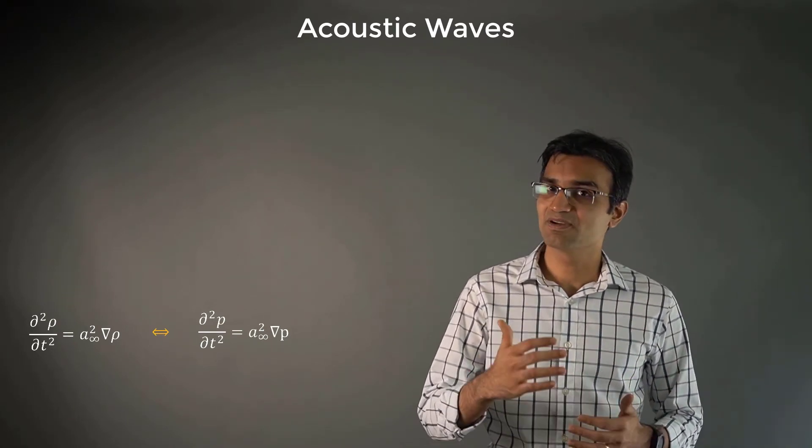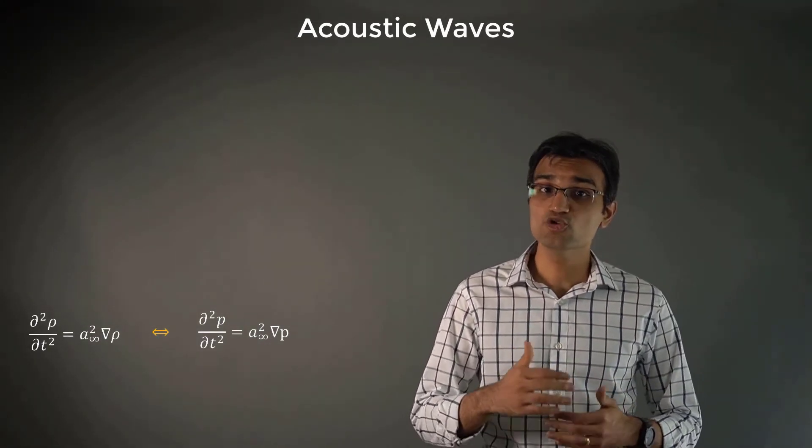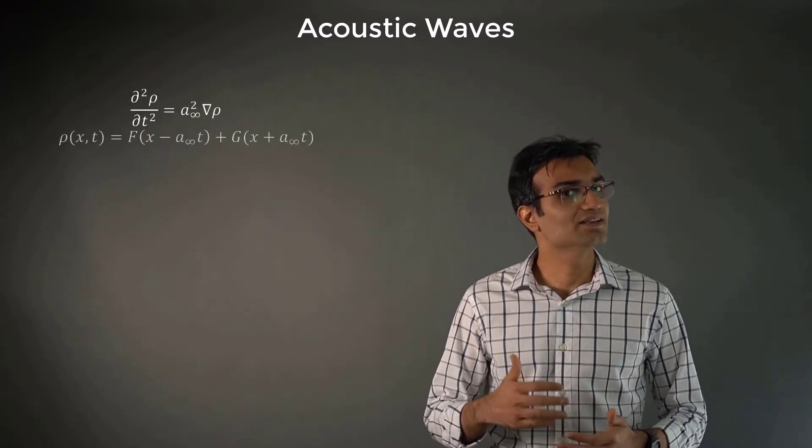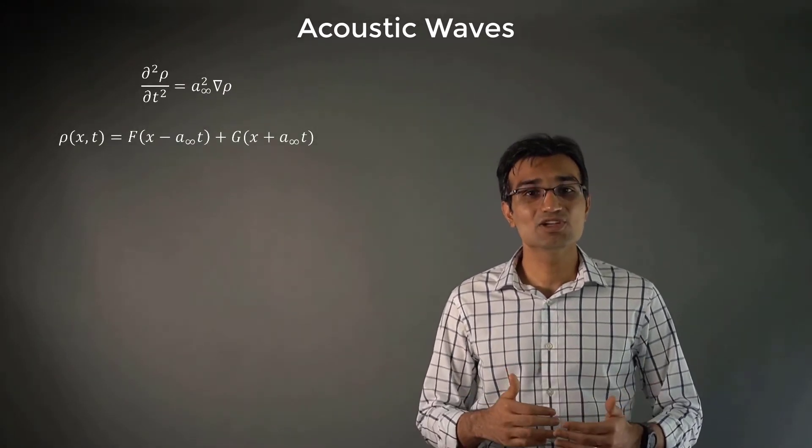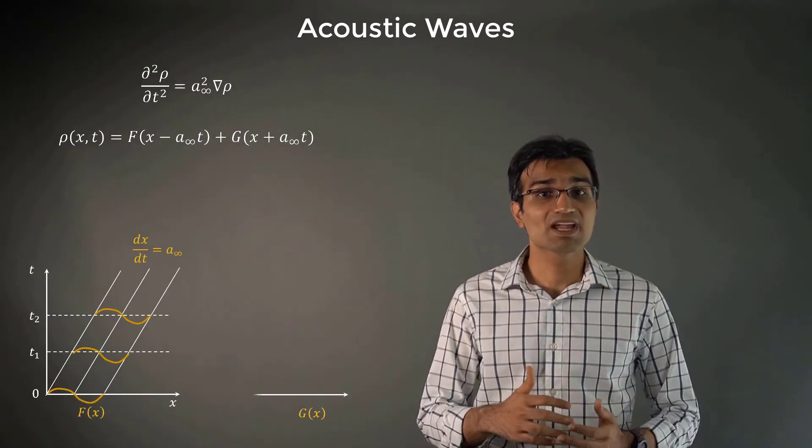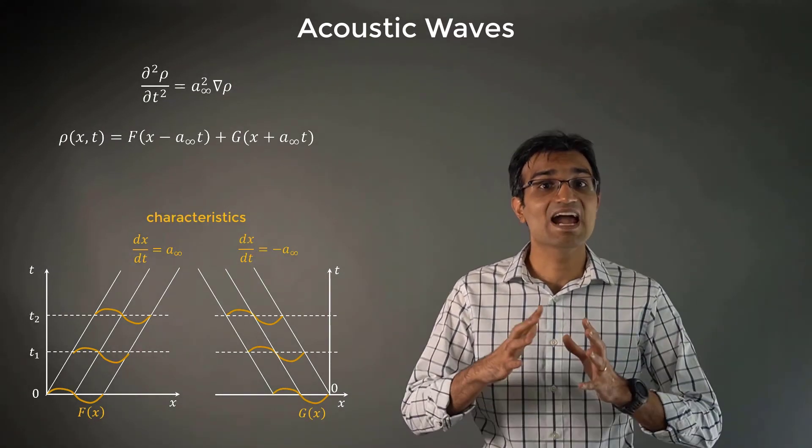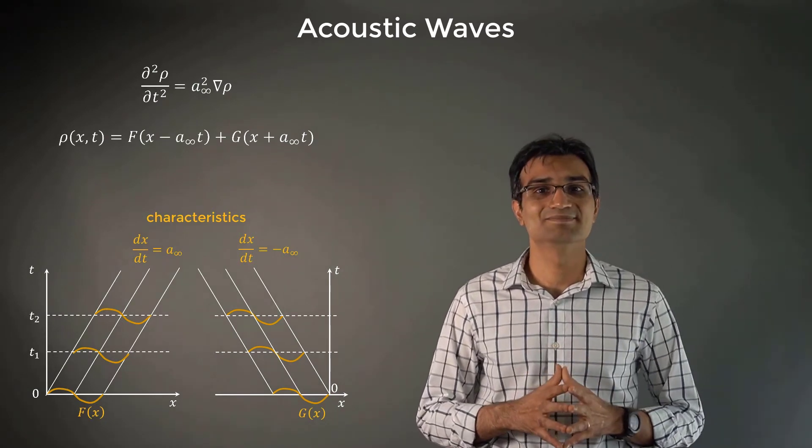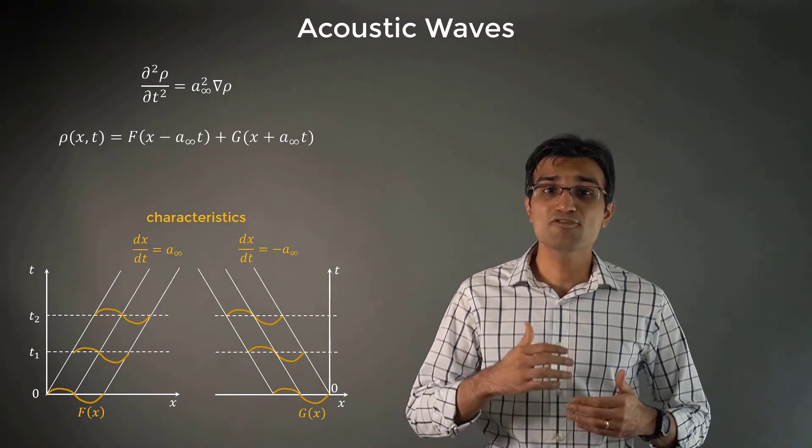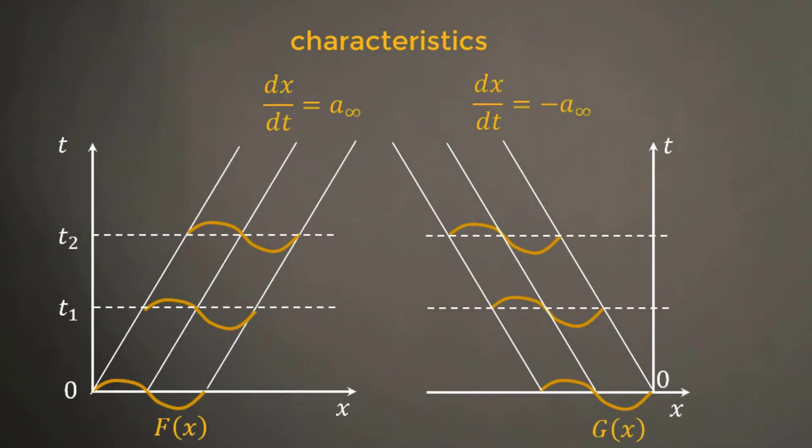A infinity here represents constant speed of sound. For one-dimensional waves, the solution of wave equation can be written in this form. This solution is a superposition of left and right traveling simple waves propagating at the speed of sound along these lines having the slope of plus and minus A infinity in the XT plane. The same form of solution holds for velocity. One important thing to note here is that the shape of the wave does not change with time in the acoustic approximation.